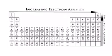Electron affinity and electronegativity follow the exact same pattern. As you go across a period from left to right, electron affinity increases. We're going to exclude the noble gases for the same reason we did with electronegativity — they don't form bonds in nature; they're stable the way they are. Going down a group, both electronegativity and electron affinity decrease. They both follow the exact same pattern.